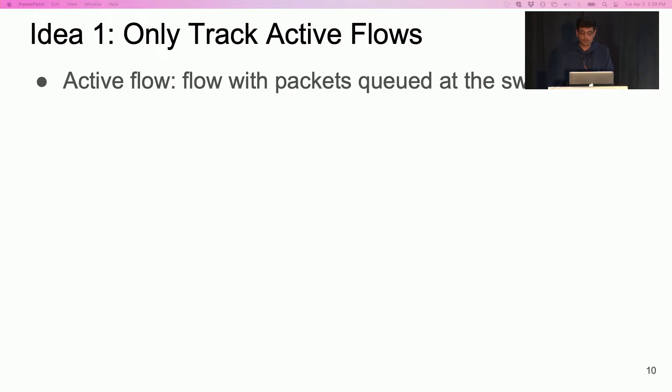Traditional approaches for per hop per flow control track state for every connection going through the switch. At any given time, many of these connections might be dormant and not have any outstanding packets in the network. Maintaining state for such connections is wasteful and unnecessary. In contrast, a BFC switch only tracks active flows.